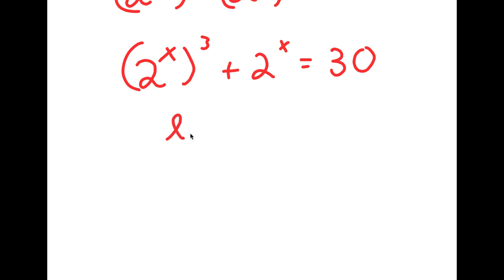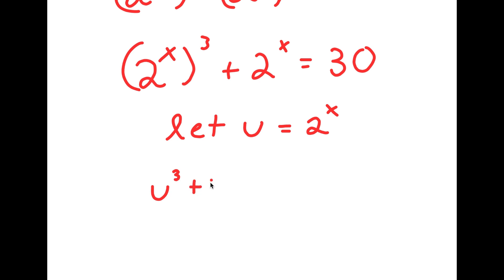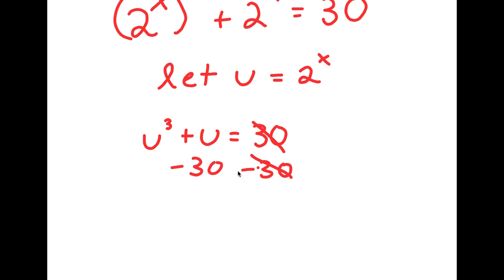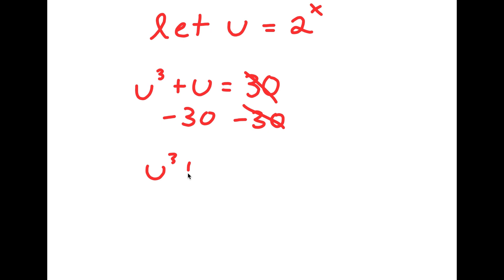Now I'm going to let the variable u equal 2 to the power of x. If I substitute u for 2 to the power of x, I get u to the power of 3 plus u is equal to 30. Now I can subtract 30 on both sides, so I get u to the power of 3 plus u minus 30 is equal to 0.